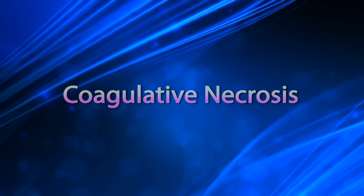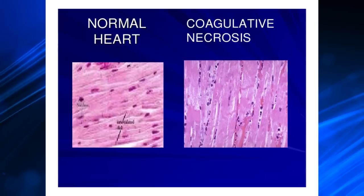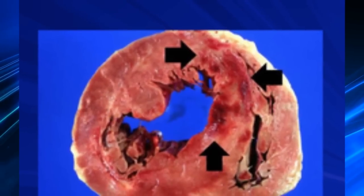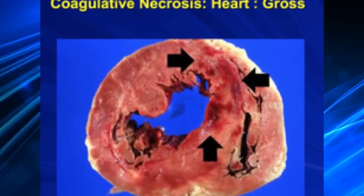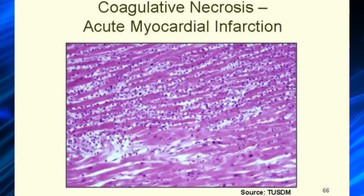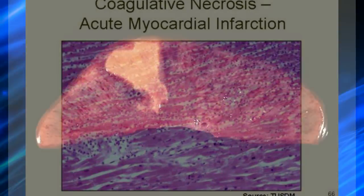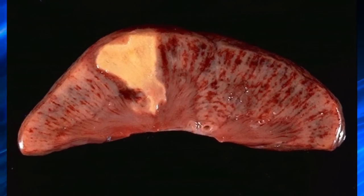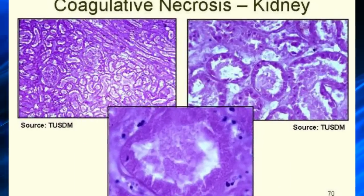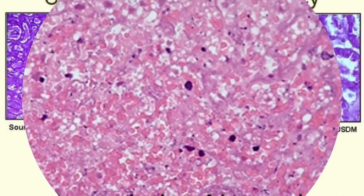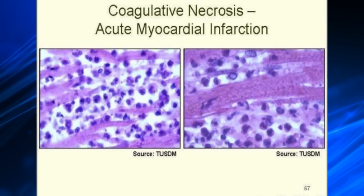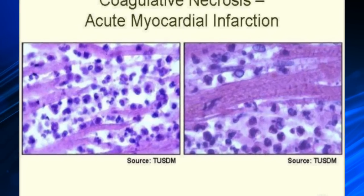Coagulative necrosis is a form of necrosis in which the underlying tissue architecture is preserved for at least several days. The affected tissues take on a firm texture. The injury denatures not only structural proteins but also enzymes, thereby blocking proteolysis of the dead cells; as a result, eosinophilic anucleate cells may persist for days or weeks. Coagulative necrosis is characteristic of infarcts in all solid organs except the brain.